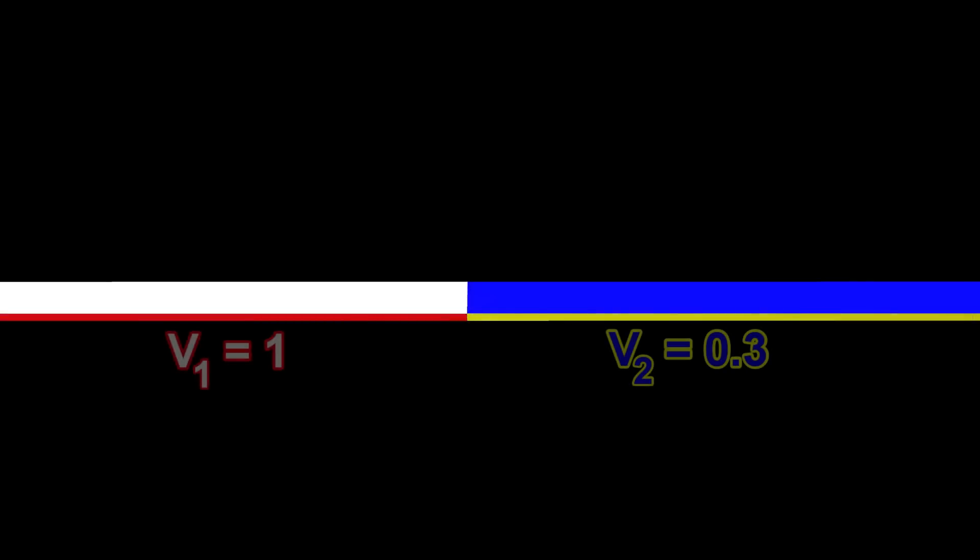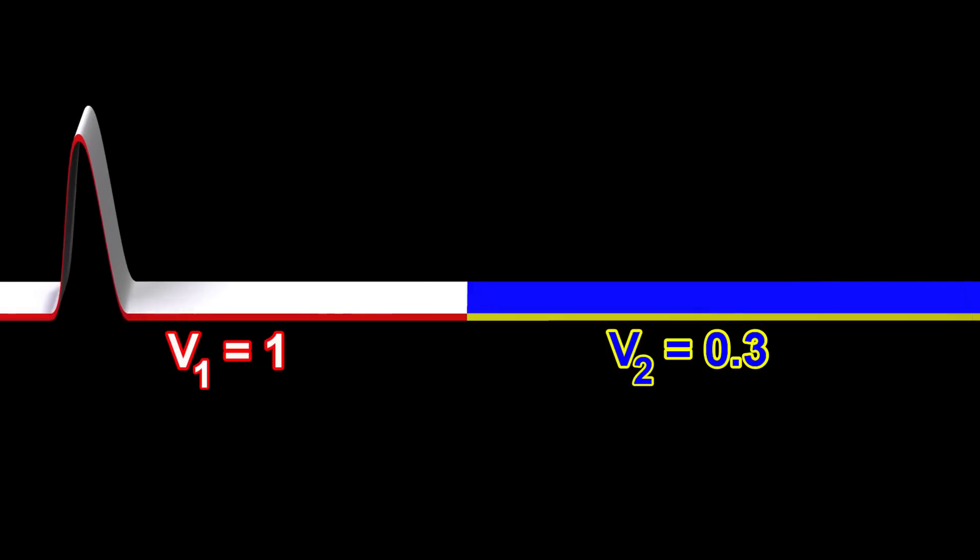In each of the following scenarios, V1 is always equal to 1, but we keep increasing V2.